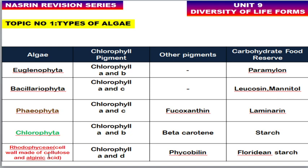The cell wall of red algae is made up of cellulose and alginic acid. Other pigments: fucoxanthin is present in Phaeophyta, beta-carotene in Chlorophyta, and phycobilin in Rhodophyta. For carbohydrate food reserves: paramylon is present in Euglenophyta, leucosin and mannitol in Chrysophyta, laminarin in brown algae, starch in Chlorophyta, and floridean starch in Rhodophyta.